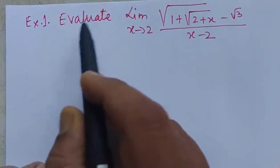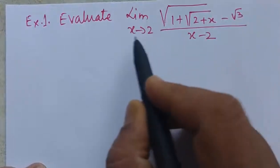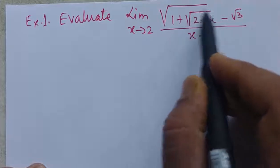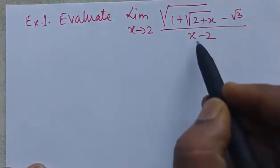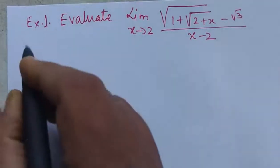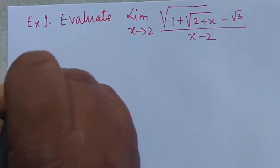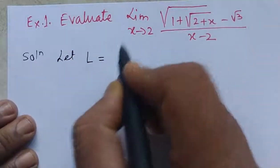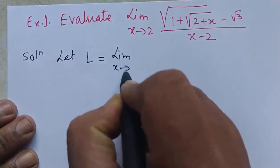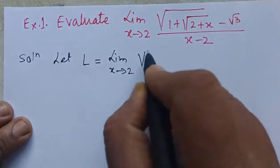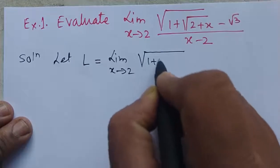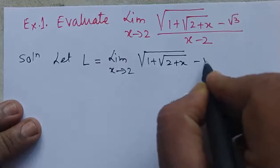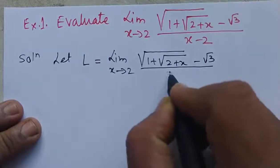Example number one: evaluate the limit as x tends to 2 of square root of (1 plus square root of (2 plus x)) minus root 3, divided by x minus 2.